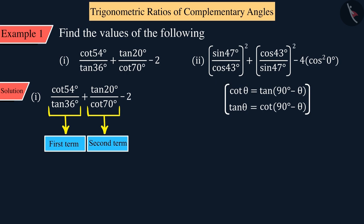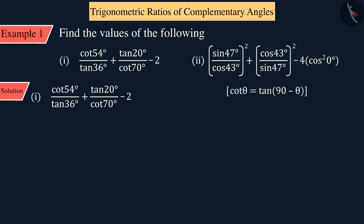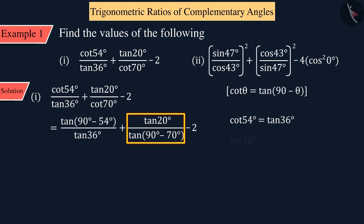Here, we change cot θ to tan(90° - θ) as per our convenience. So, the first term of the expression cot 54° is written as tan(90° - 54°) which gives us cot 54° equal to tan 36°. And similarly, in the second term cot 70° equals tan 20°.